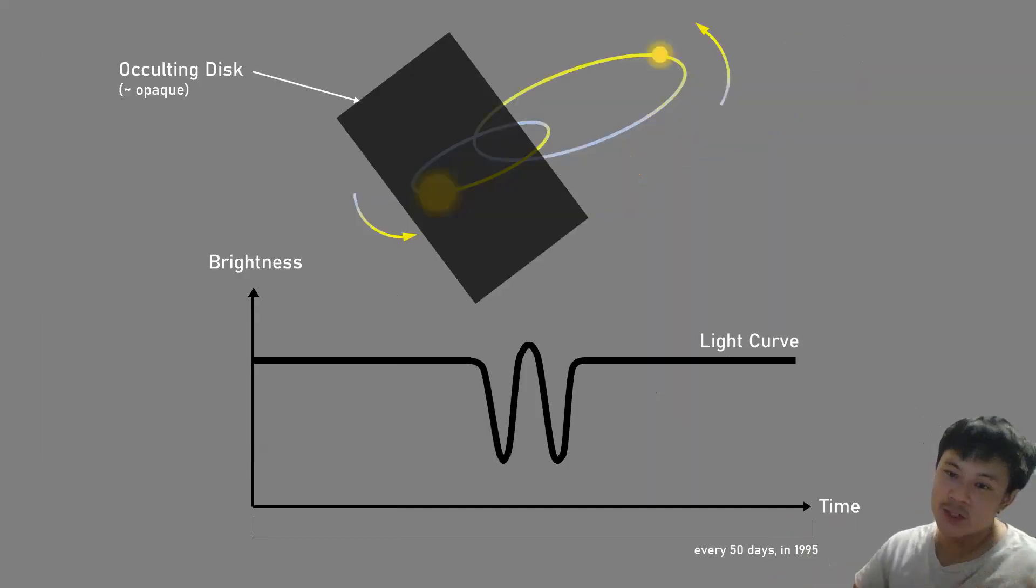Now I'm going to give you an intuition for how this model can produce these light curves. You can imagine a sheet of paper in the sky as a proxy for a disk. Imagine it's opaque, covering this binary star. Since the disk moves at a much slower rate compared to the binary, you can almost imagine it as stationary for this theoretical thought experiment.